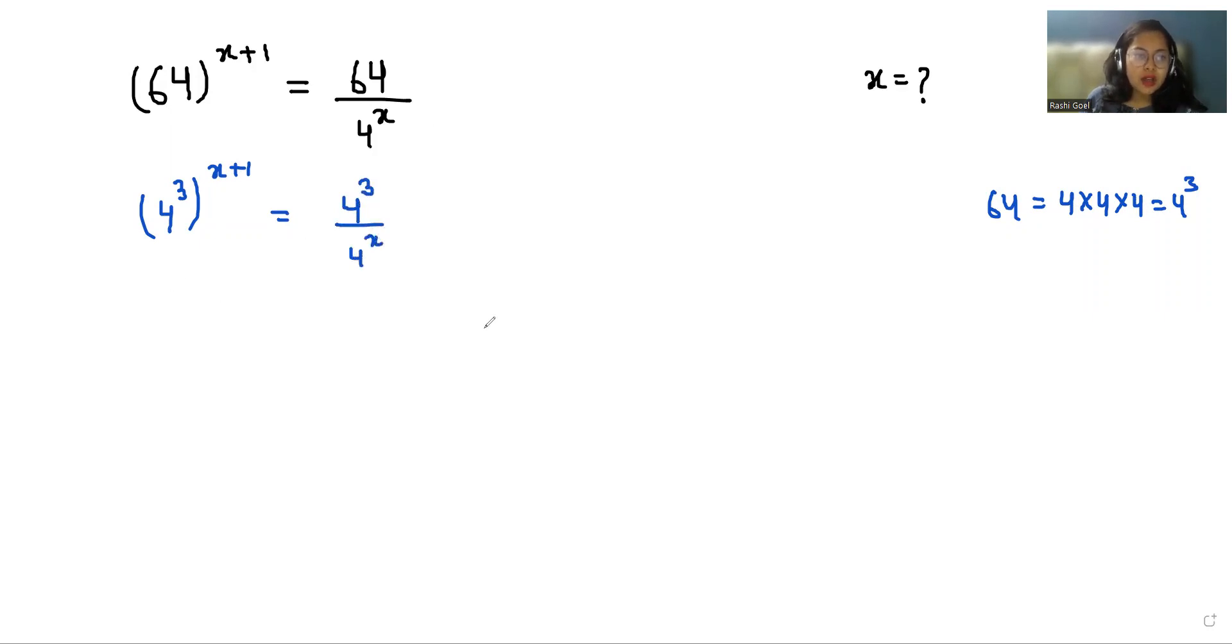Now according to the exponent rule (x^m)^n = x^(mn), we can write this as 4^(3x+3) equals 4^3 divided by 4^x.